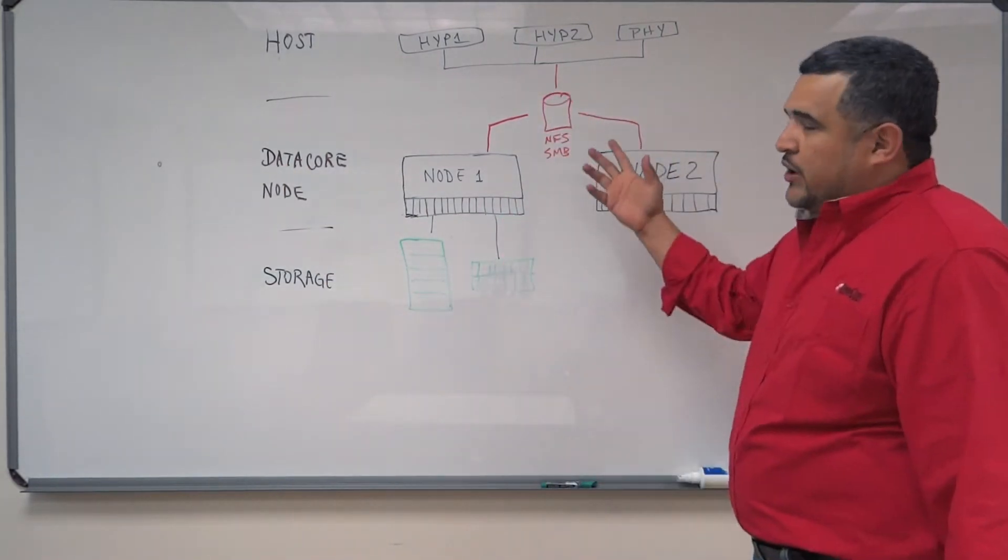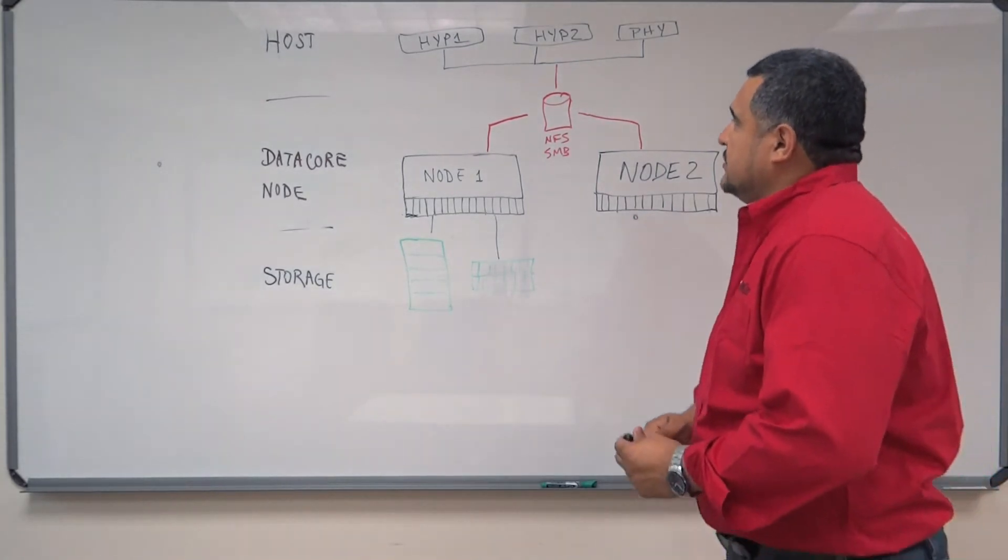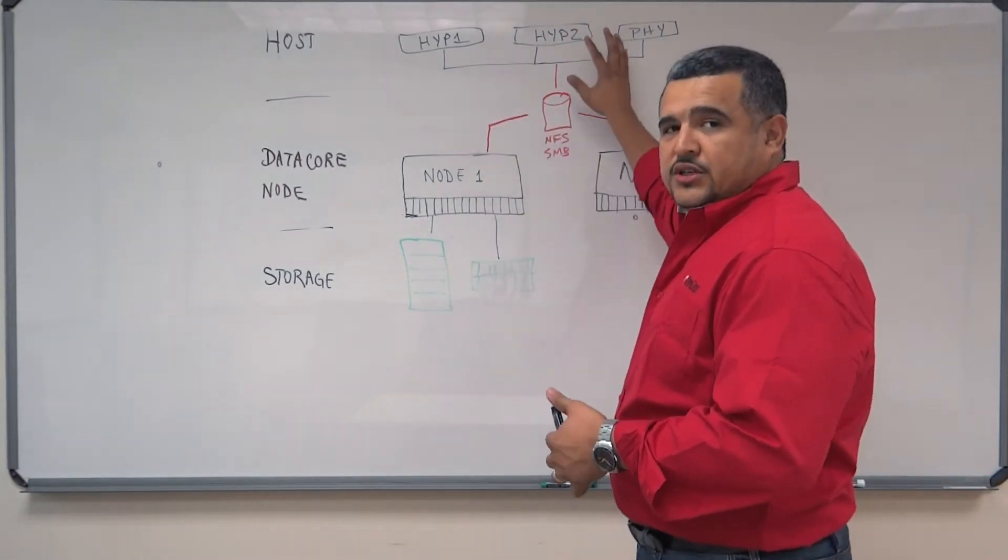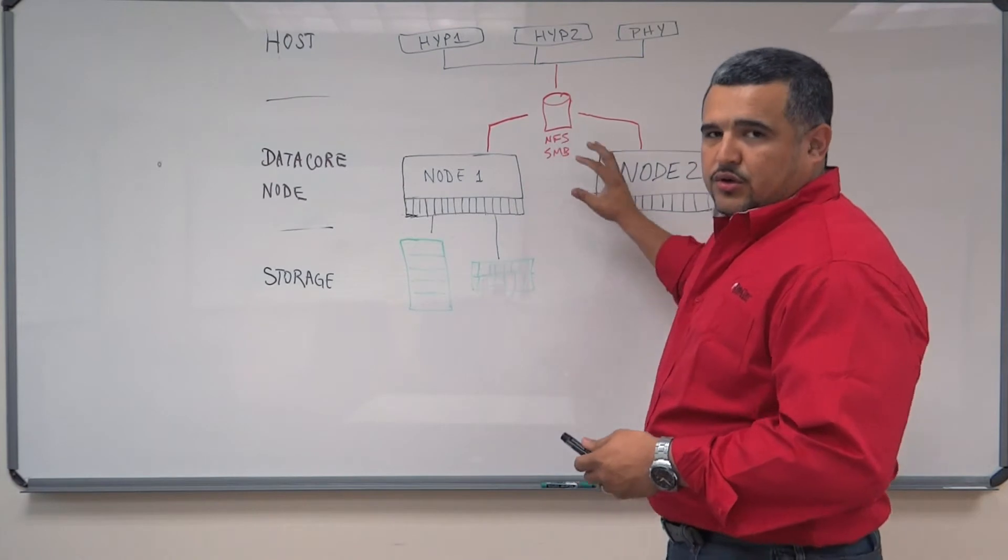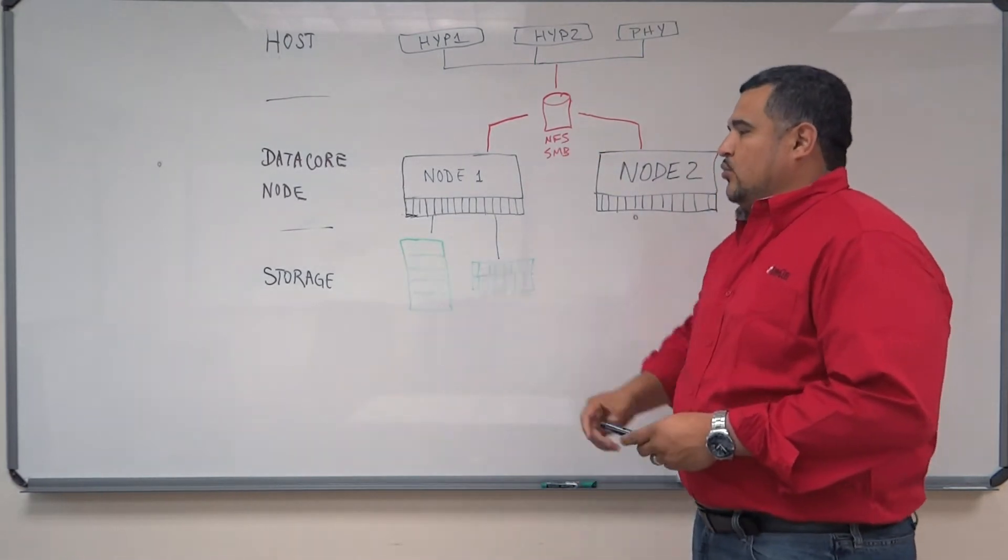To begin, I just wanted to show you what the board is showing. On the top we have the host. In the middle we have the DataCore nodes. And underneath we have the storage.